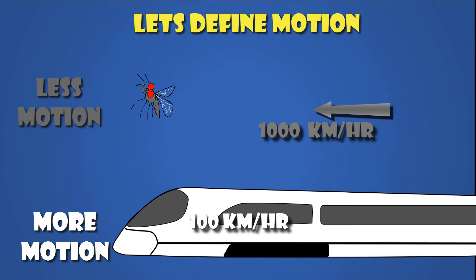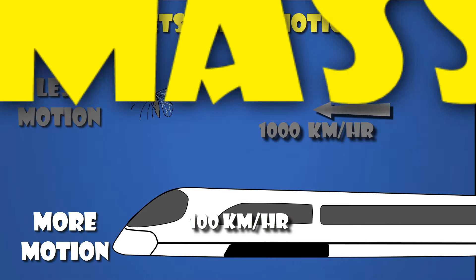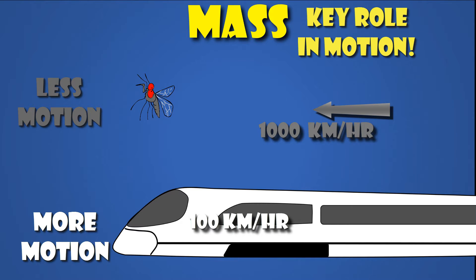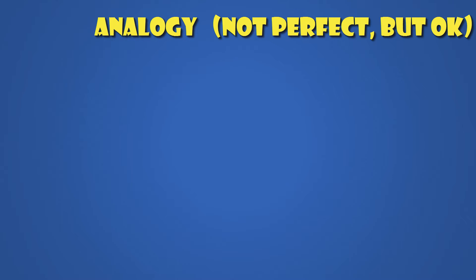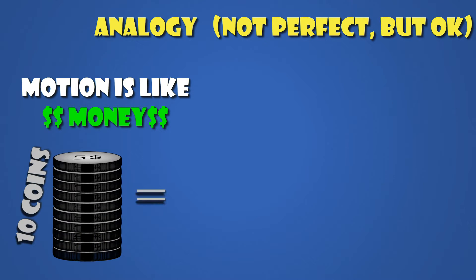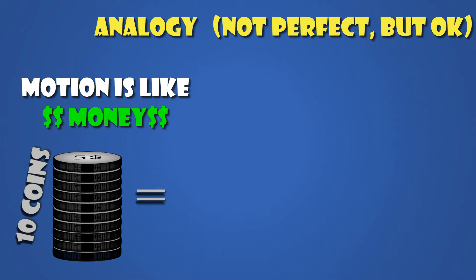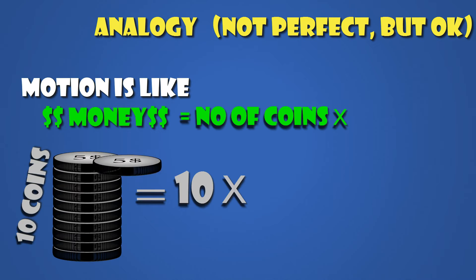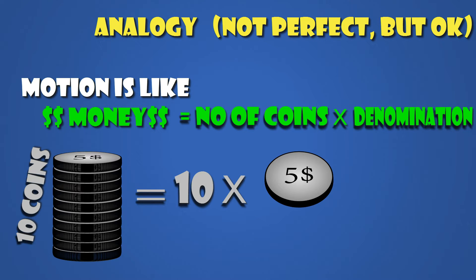Why? Mass. Mass also plays a key role here. Think of motion as how much money you have. If you have ten coins with you, it doesn't mean you have ten bucks. To calculate how much money you have, you need to multiply that number — ten — with the denomination that the coins represent. In this example, five bucks, so the total money is 50 bucks.